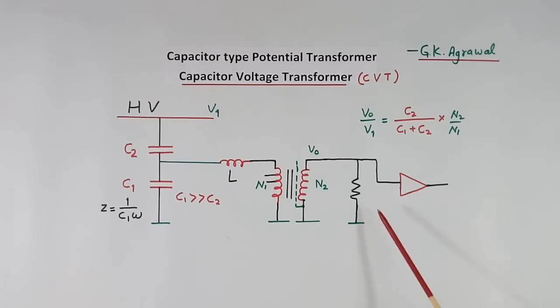It has another use. CVT has one more use. That is called PLC, power line carrier. That is used for communication.